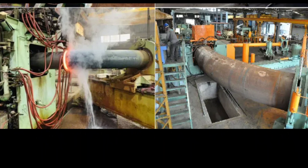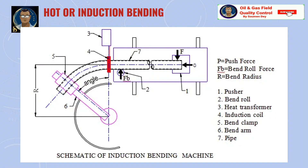Just beyond the induction coil, the heated pipe material is quenched using a water spray on the outside surface of the pipe. In the next step, the induction bend is removed and sent for inspection and measurement of tolerances. The final step for the induction bend is the use of post-bend heat treatments for stress relieving, normalizing, etc.